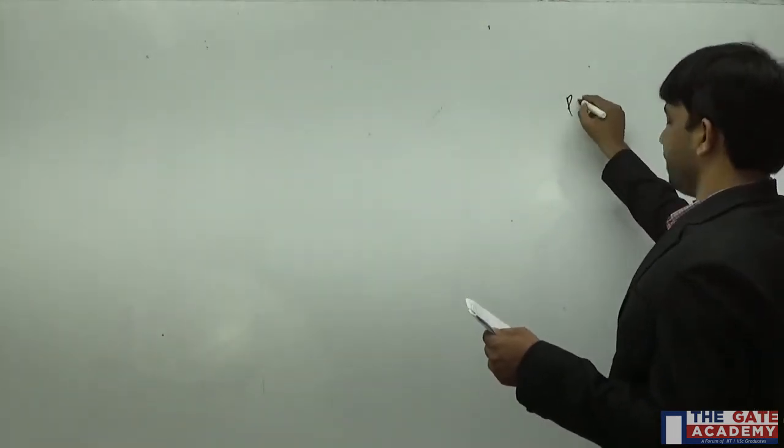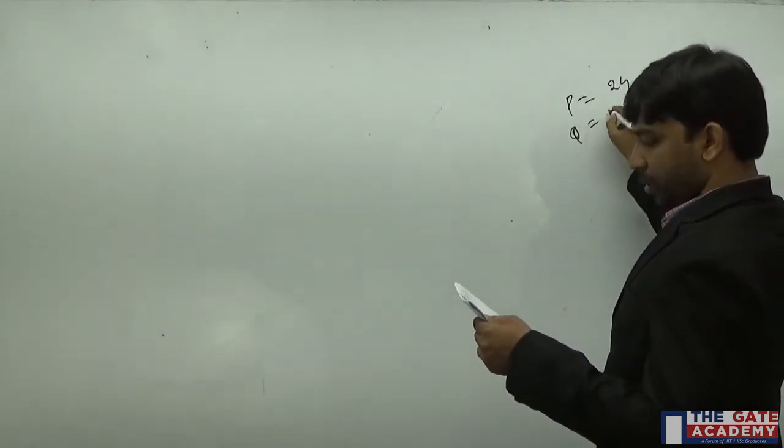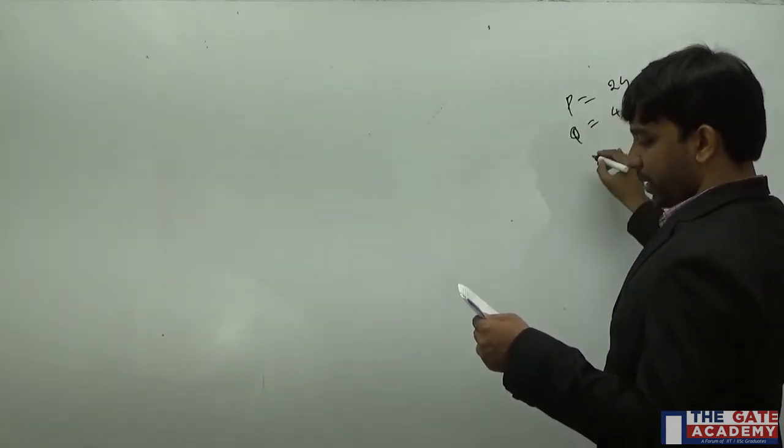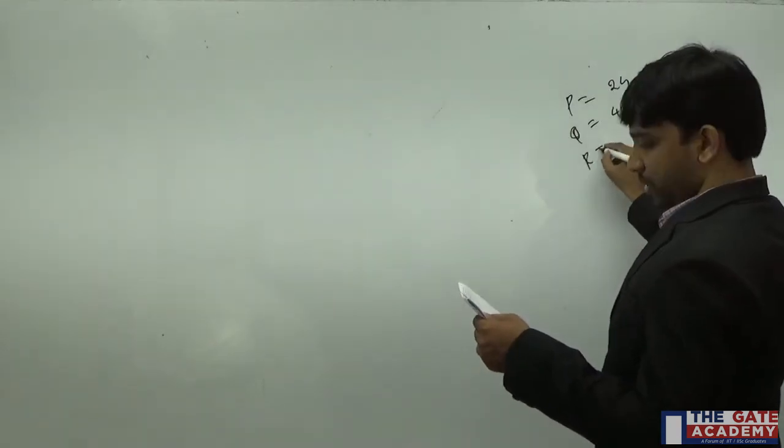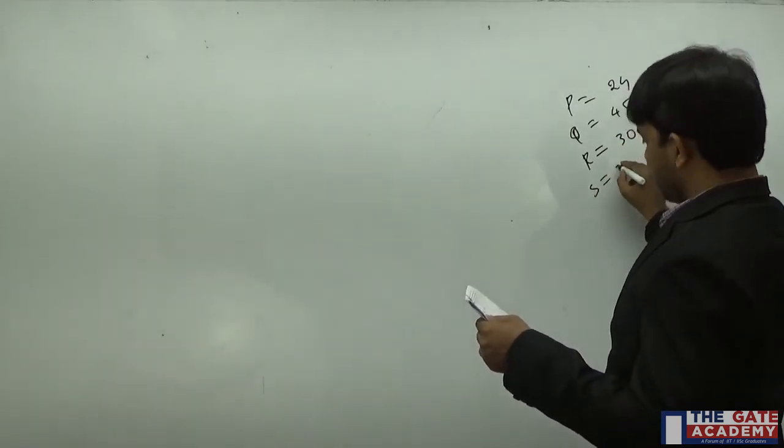The number of teeth on P is given as 24, number of teeth on Q is given as 45, number of teeth on R is given as 30, and the number of teeth on S is given as 80.